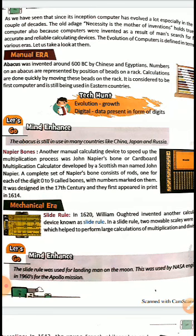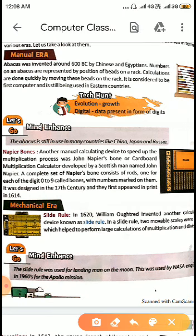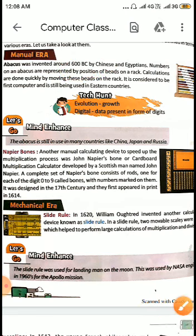The first era is the manual era — where we relied on manual tools. Abacus was invented around 600 BC. BC means before Christ — it means 600 years before the birth of Christ. So that is about 2,620 years ago. The Abacus was invented by the Chinese and the Egyptians. The numbers on the Abacus are represented by the position of beads on a rack, and calculations are done quickly by moving these beads on the rack.